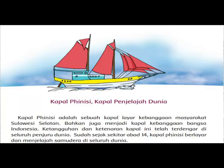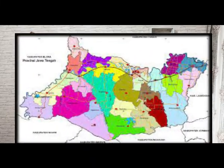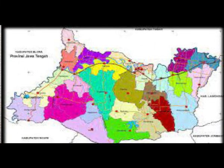Setelah itu, tentukan ide pokok paragraf satu dari teks bacaan tersebut. Nah anak-anak, ide pokok paragraf satu tadi yaitu kapal penjelajah dunia adalah sebuah kapal layar kebanggaan masyarakat Sulawesi Selatan. Selanjutnya, perhatikan kondisi geografis Indonesia. Ini gambar peta kapal penjelajah dunia.